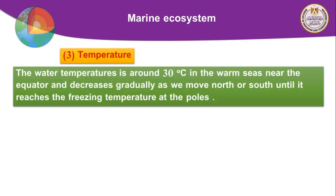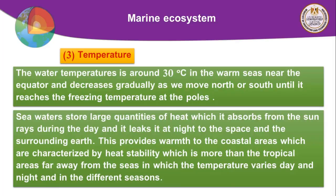Temperature varies according to regions and seasons. During summer, surface water temperature is higher than below, while in winter, surface temperature is lower than below. This is because seawater stores large quantities of heat absorbed from the sun during the day and releases it at night to space and the surrounding land.